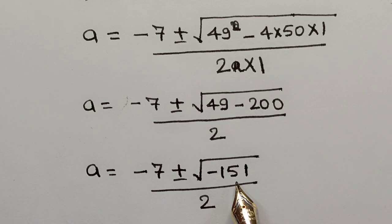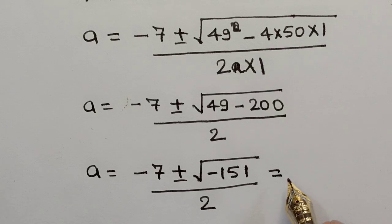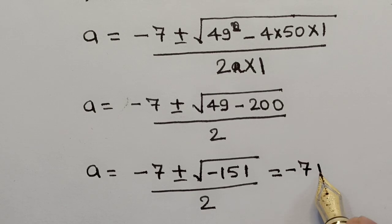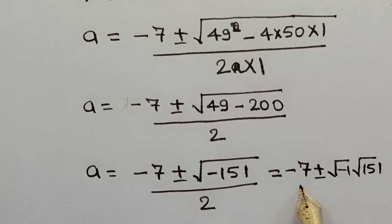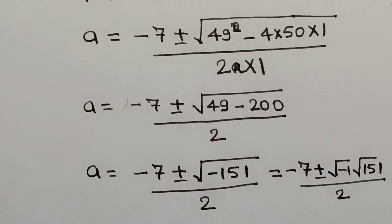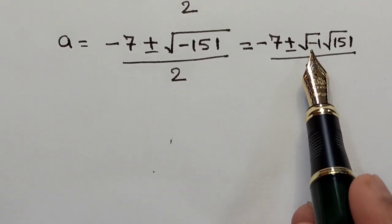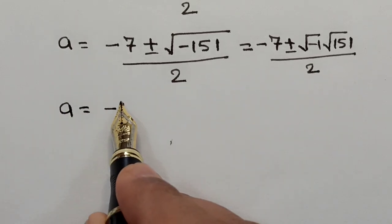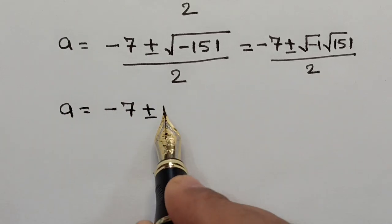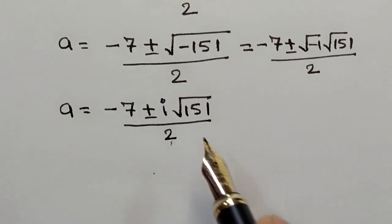We can write √(-151) as √(-1) · √151. Since √(-1) = i (iota), the expression becomes A = (-7 ± i√151) / 2.